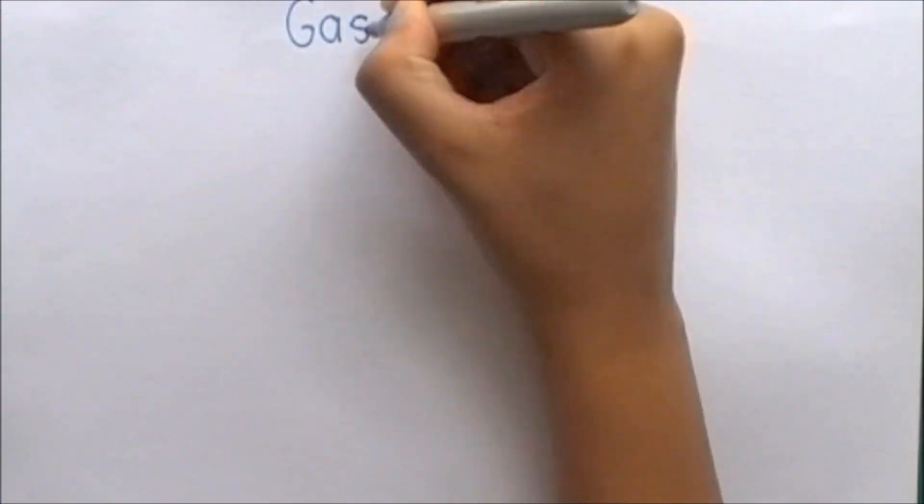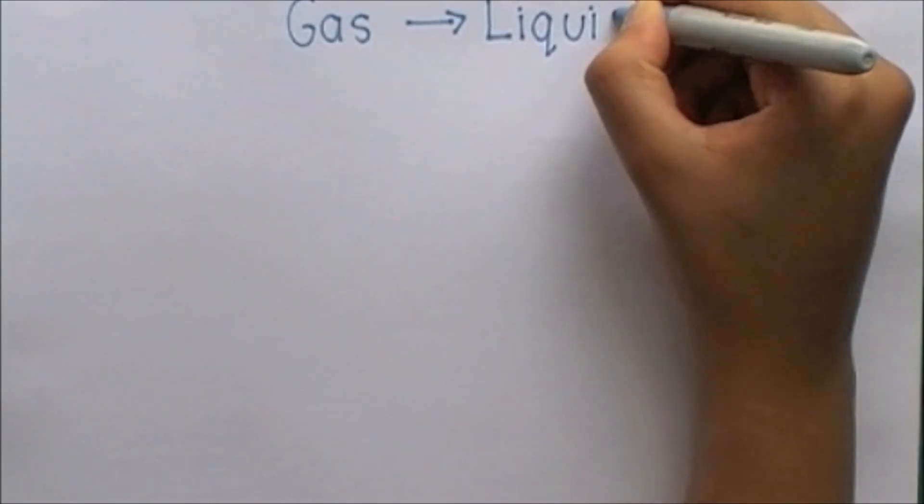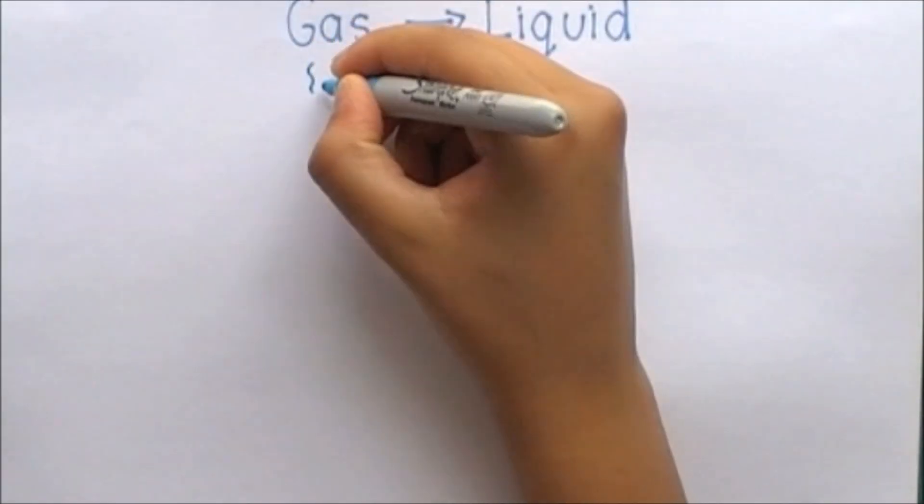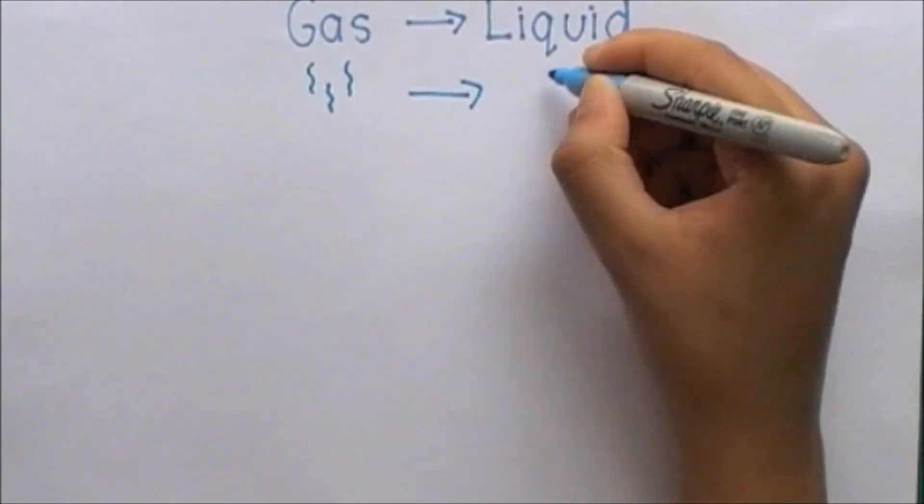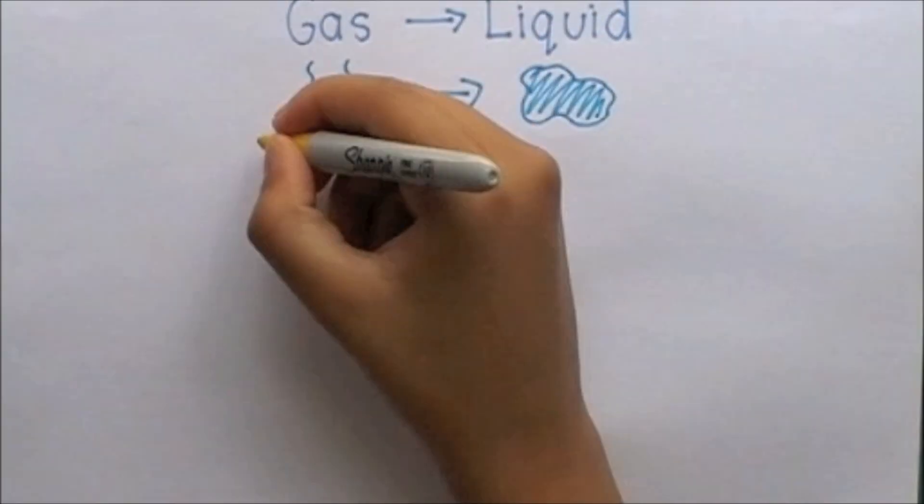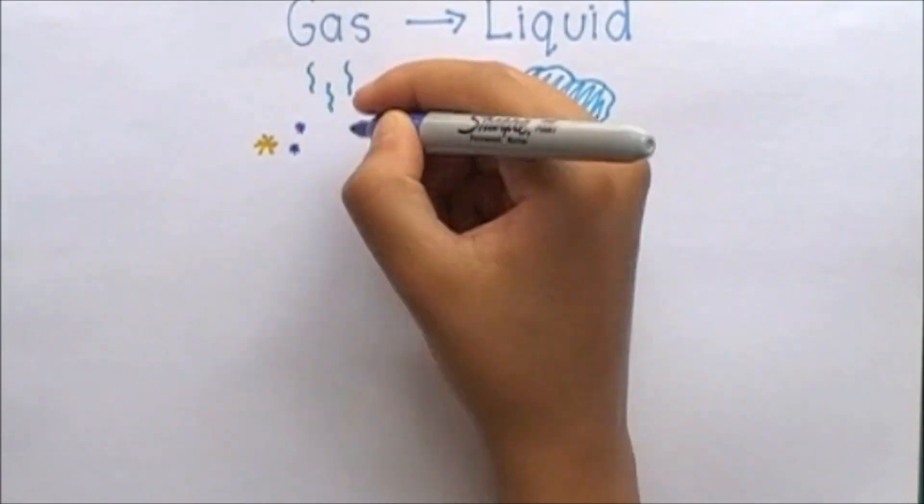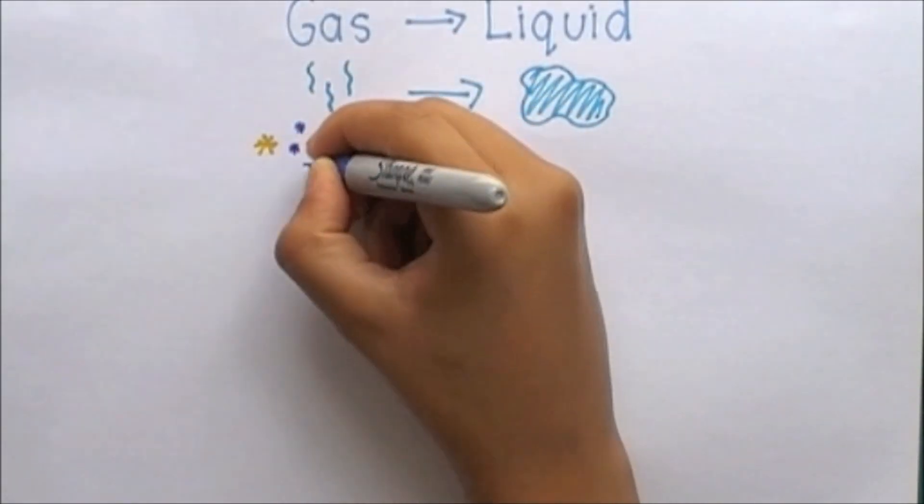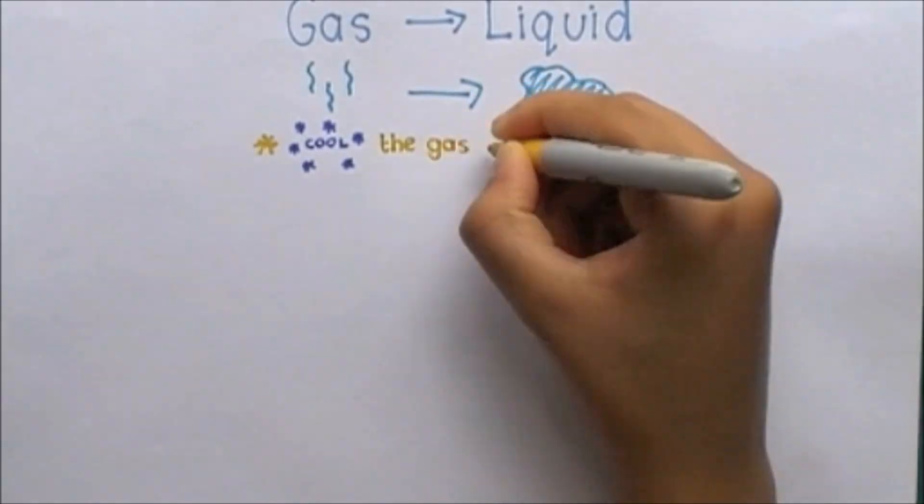The change in state from a gas to a liquid is called condensing. This change is brought about by cooling the gas until it condenses into a liquid.